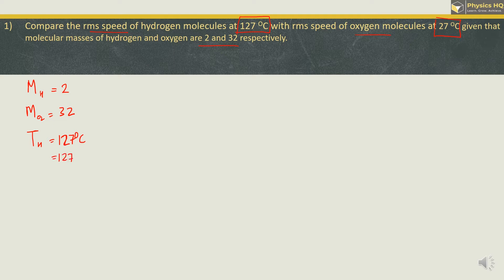To convert Celsius to Kelvin, always remember to add 273. So temperature for hydrogen: 273 + 127 = 400 K. Similarly for oxygen, temperature is 27°C, so 27 + 273 = 300 K.